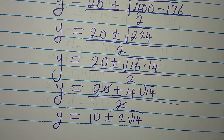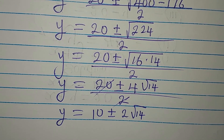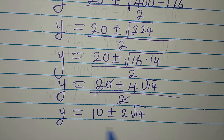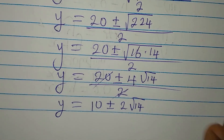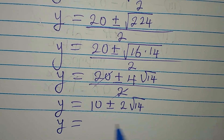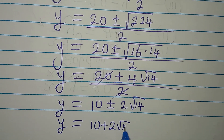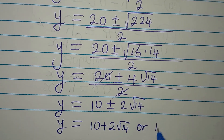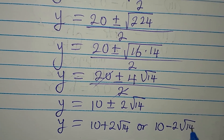Now that we have the value of y, we can go back to equation 3 to find x. From here, y is either 10 plus 2 root 14 or 10 minus 2 root 14.